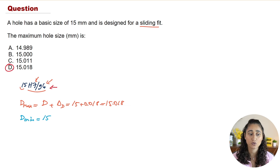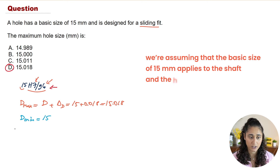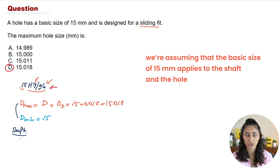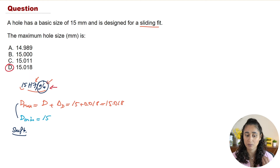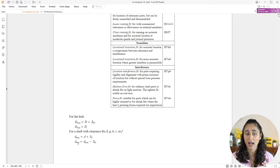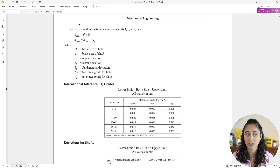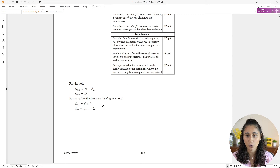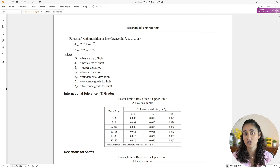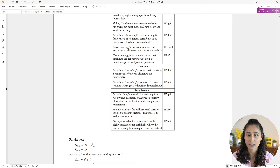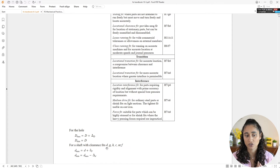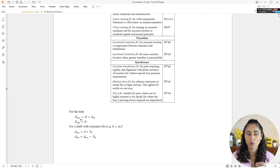Now let's do the same for the shaft using the G6 term. We need the maximum and minimum shaft equations from the reference handbook. There are two sets: one for clearance fits and one for transition or interference fits. Since a sliding fit is a clearance fit with letter G, we use the clearance fit equations to determine D_max and D_min for the shaft.